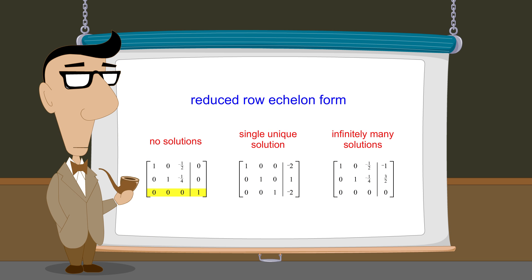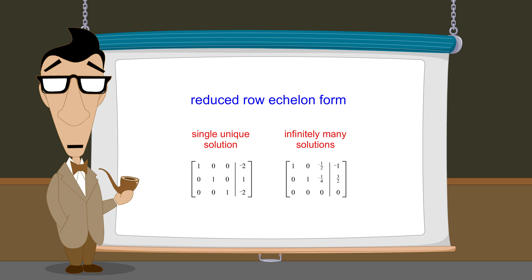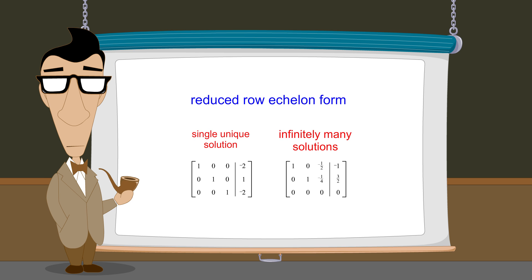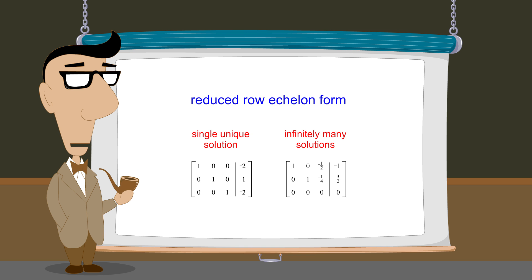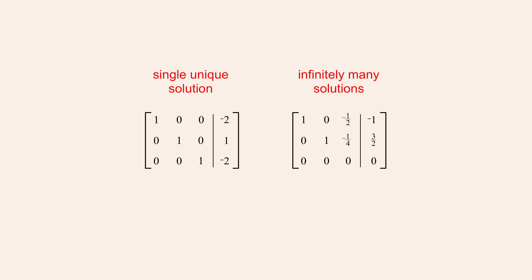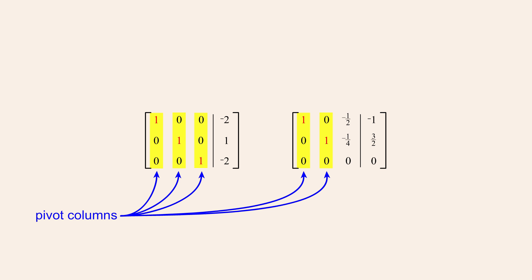Once we have eliminated the possibility that a system is inconsistent, we know that the system is consistent with one or more solutions. The next step is to determine whether the system has a single unique solution or infinitely many solutions. We can determine this by looking at the positions of what are called pivot columns. In reduced row echelon matrices, the left-most non-zero entry in each row — called the row's leading entry — must be a 1. The positions these leading entries occupy are called pivot positions, and the columns containing these pivot positions are called pivot columns.